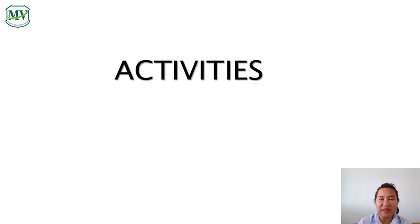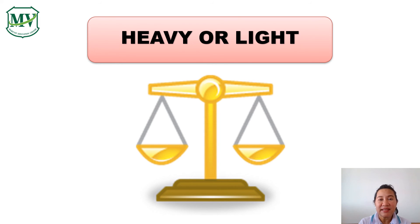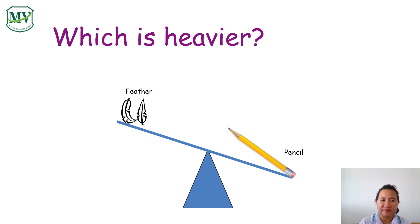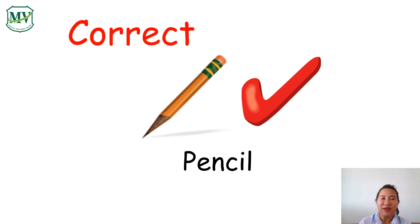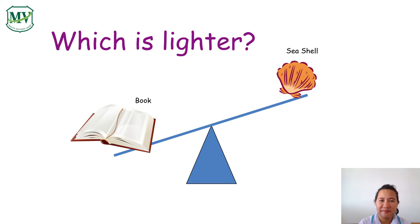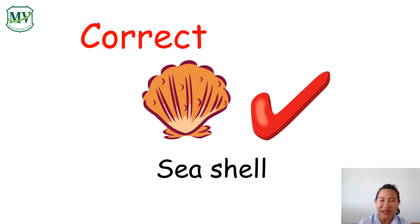At this point, we are going to have some activities. You are going to identify whether the object is heavier or lighter. Which is heavier: feather or pencil? The pencil is heavier than the feather. Next — which is lighter: the book or the seashell? Good job! The seashell is lighter than the book.